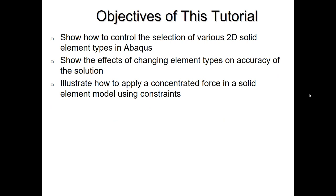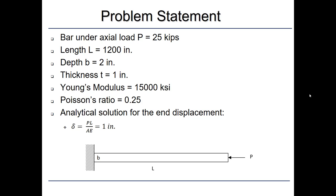The objectives of this tutorial are to show how to control the selection of various 2D solid elements in Abaqus, to show the effects of changing element types on the accuracy of the solution, and to illustrate how to apply a concentrated force in a solid element model using constraints. Specifically, we're going to be modeling a bar under a uniaxial state of stress.